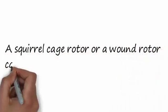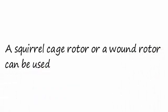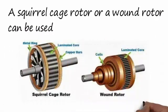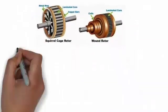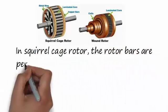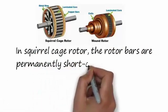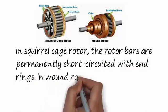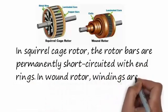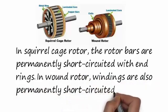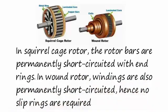A squirrel cage rotor or a wound rotor can be used. In squirrel cage rotor, the rotor bars are permanently short-circuited with end rings. In wound rotor, windings are also permanently short-circuited, hence no slip rings are required.